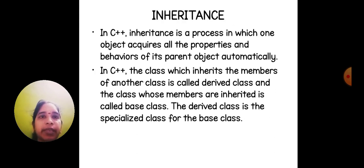Next one is inheritance. In C++, inheritance is a process in which one object acquires all the properties and behaviors of its parent object automatically. The class which inherits the members of another class is called the derived class, and the class whose members are inherited is called the base class. The derived class is the specialized class for the base class.